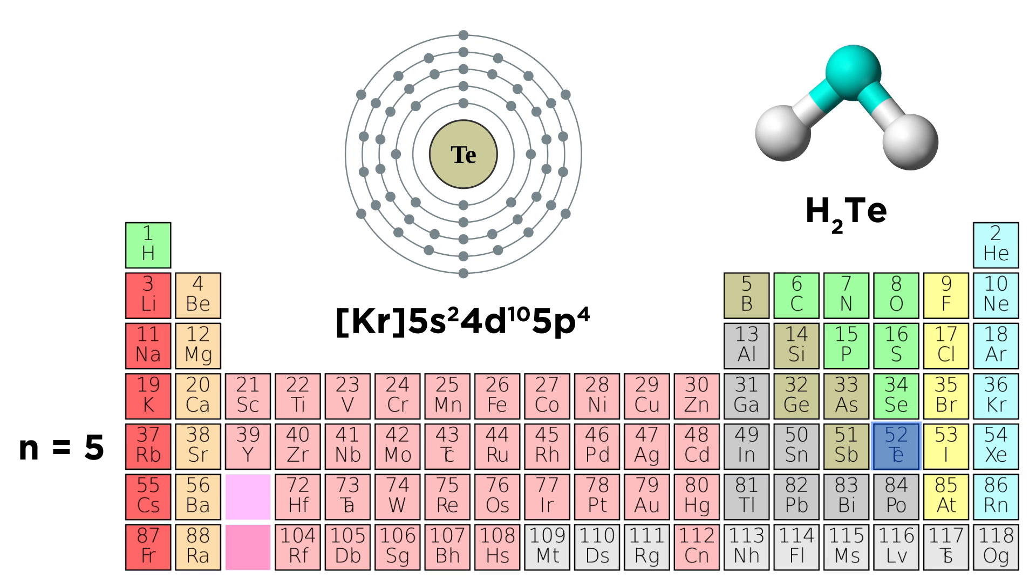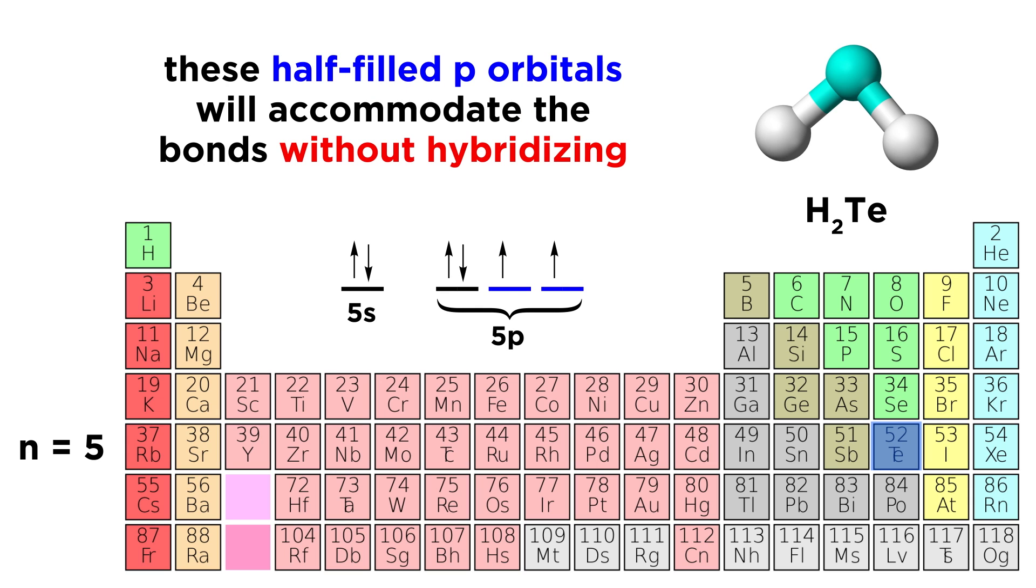If we look at hydrogen telluride, its valence electrons are in the N equals five shell. That's quite far away from the nucleus. Because of this, its five P orbitals with unpaired electrons will simply participate in covalent bonds as they are, without hybridizing. As we can see from the orbital diagram, one five P orbital is already filled up, so this half-filled one will make a sigma bond by overlapping with hydrogen's one S orbital, and this other half-filled one will do the same thing with another hydrogen atom.